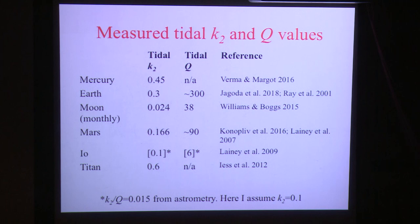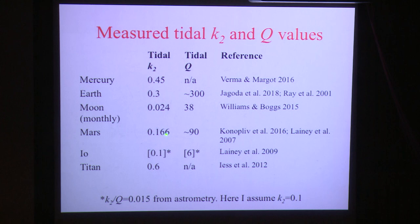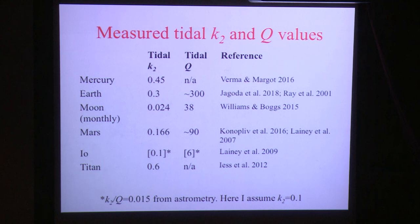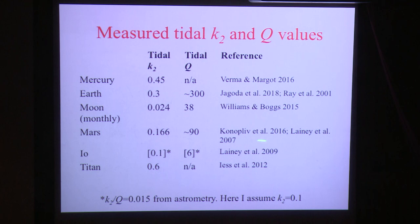By now we have a fairly good list of measurements of these properties. We know K2 for a bunch of inner solar system objects, and we have a K2 measurement for Titan — which is clearly surprisingly deformable. We don't have a K2 for Io, but we do have K2/Q, so if you guess K2 you can derive Q or vice versa. The Earth is perhaps surprisingly not very dissipative compared to the Moon and even Mars. These K2 values essentially all come from some kind of gravity measurement.